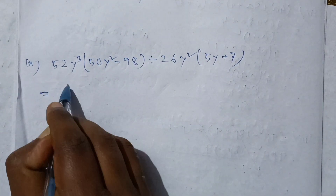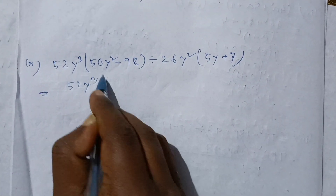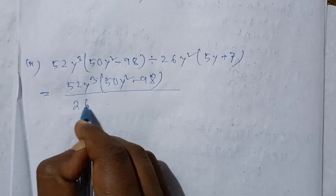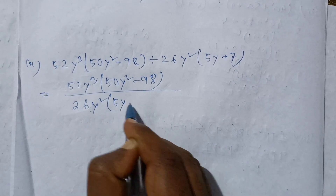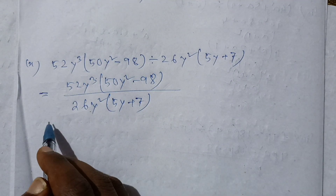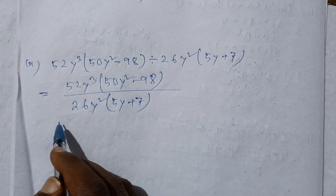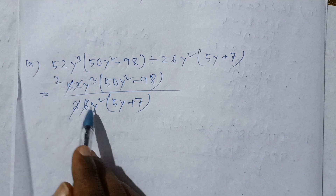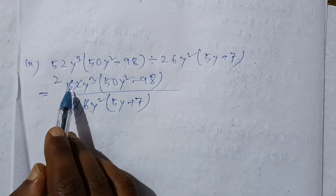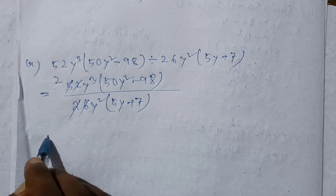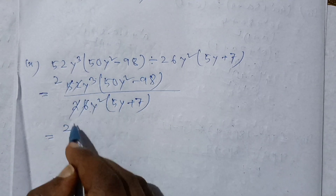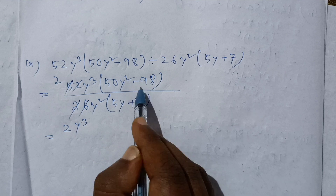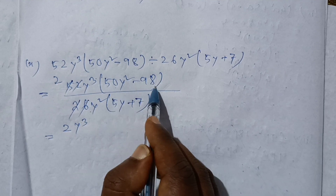The next problem, number 5, involves 2 times 50y squared minus 98 divided by 26y squared times 5y plus 7. We take 2 as a common factor from the numerator, giving 2 times 25y squared minus 49. We recognize 25y squared minus 49 as 5y squared minus 7 squared.